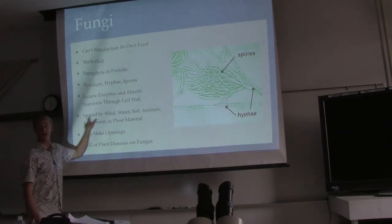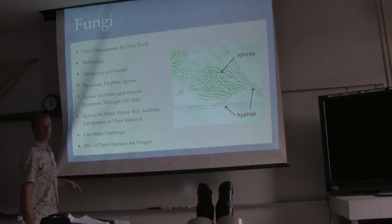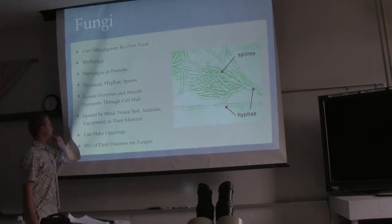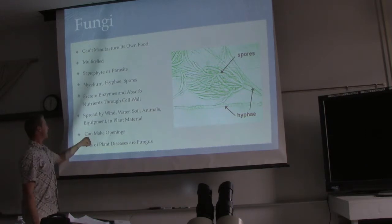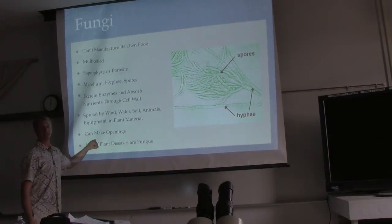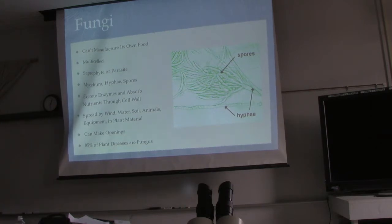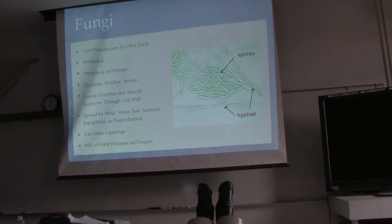Use a bleach spray on your equipment every time you go onto the field. Fungi can also make their own openings in a plant — laying on the plant surface, excreting an enzyme that punctures a hole in the leaf or stem, and then entering through that hole it created itself.